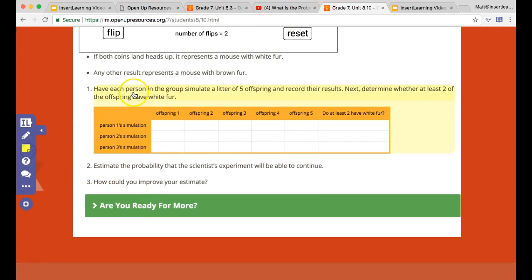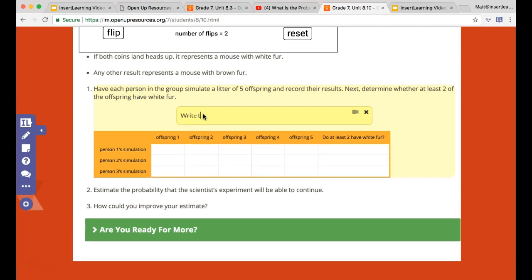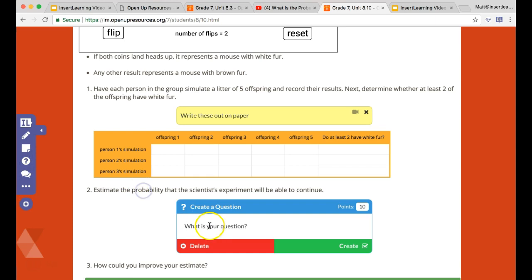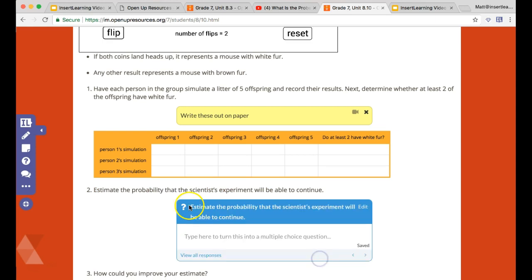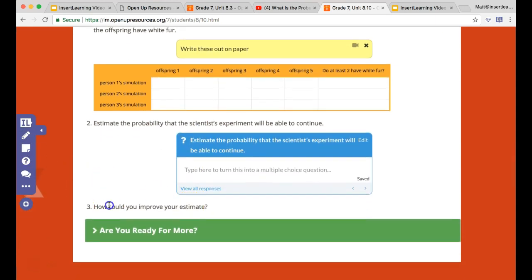So I can have a little note here of write these out on paper, but then down here I now want them to put their final answer within Insert Learning, because that's going to make it a lot faster for me as a teacher to get an instant snapshot of what the students are thinking and what they're understanding as they're going through. So I'm going to copy this question and paste it in. And same thing for this one: how could you improve your estimate?